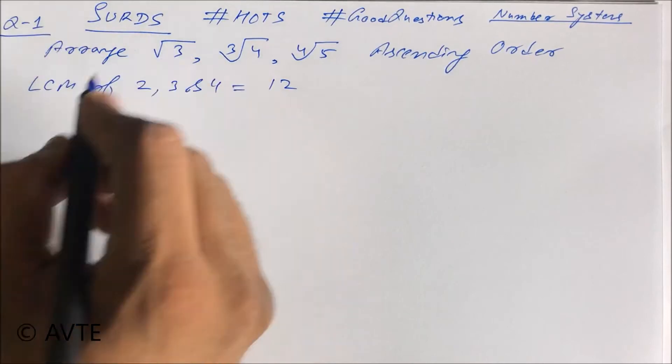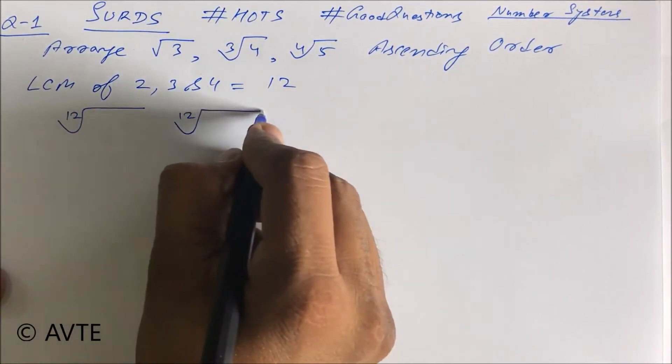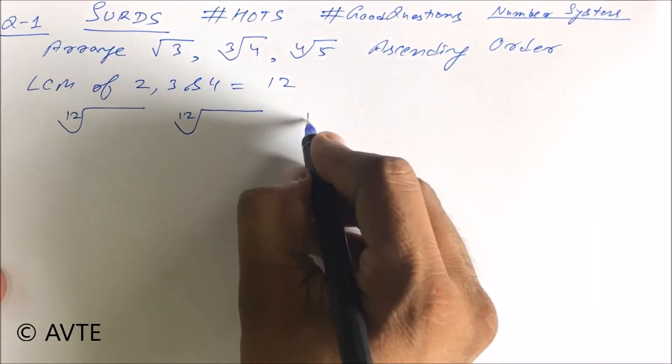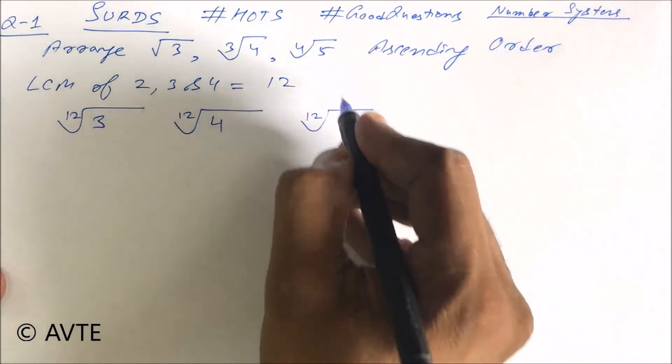So we can change √3 to 12th root, we can change ∛4 to 12th root, and we can change ∜5 to 12th root. The base is 3, the base is 4, and the base is 5.